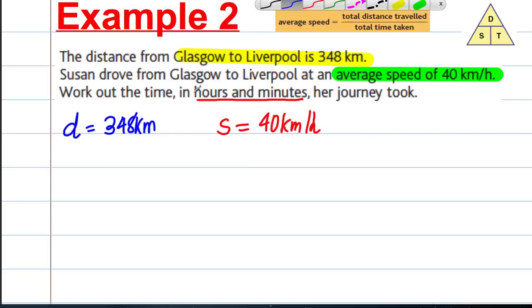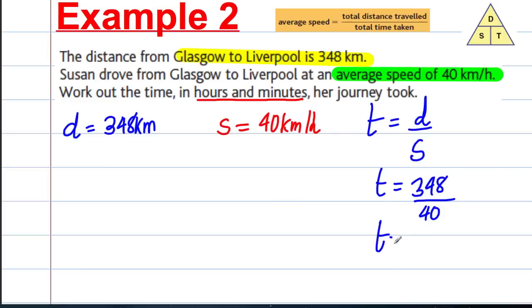Rearranging our speed distance time formula, time equals distance over speed. Therefore, time equals 348 divided by 40, and we get ourselves 8.7 hours because we're dealing in hours here.